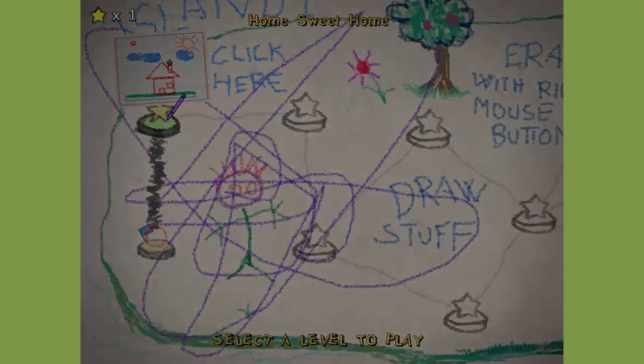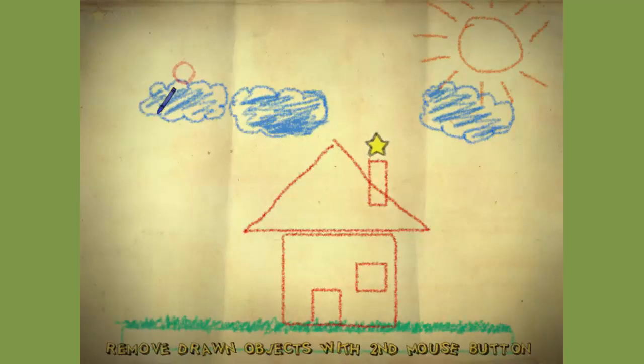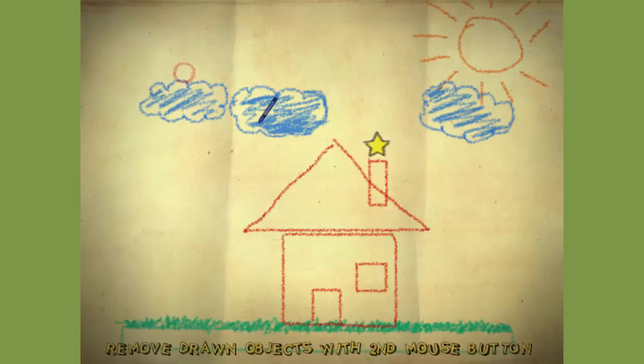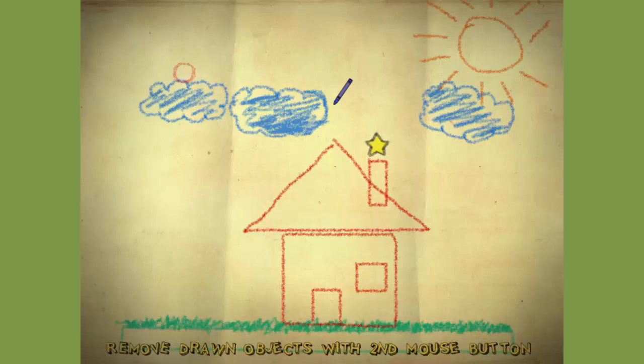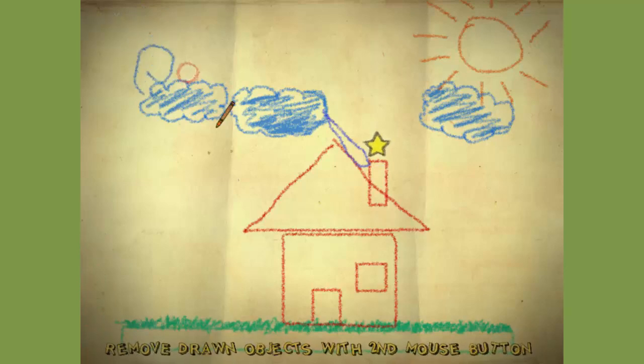Second level. Remove objects with the second mouse button. Okay, that's after you draw it. Alright, so we're going to draw a big loopy thing right here. There we go. I'm just going to push it. We're going to push the ball. There we go.